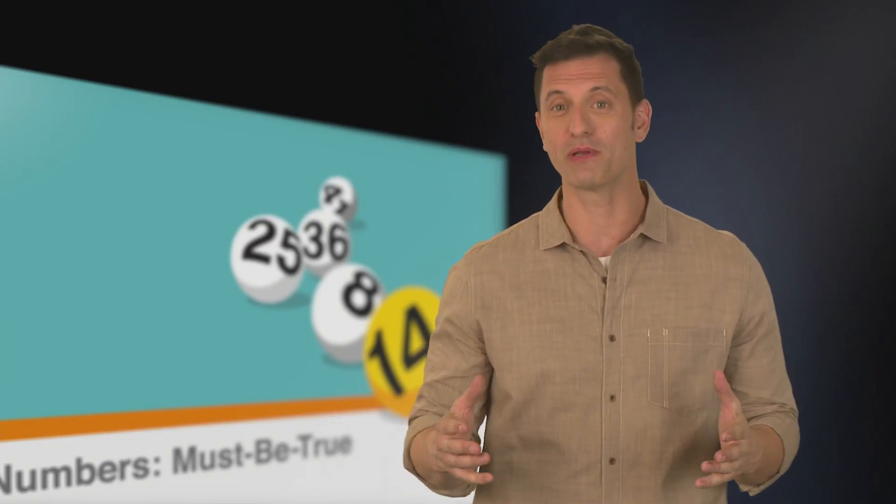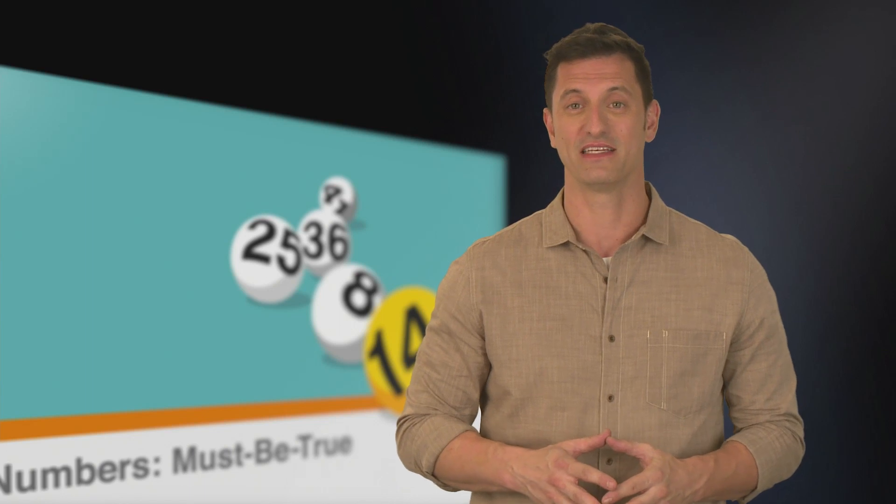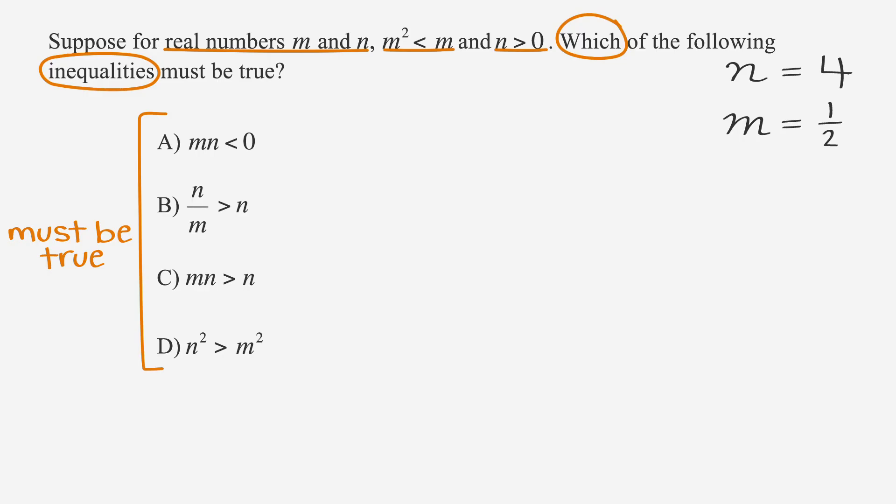Have I lost you yet? Feel free to pause the video or replay it to get a second look. If not, let's move forward and test our answer choices. Answer choice A is the expression m times n is less than zero. When we plug our numbers in for m and n, we get one half times four, which equals two. Since that's bigger than zero, we can cross out A.